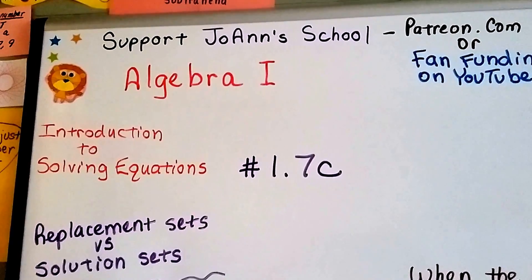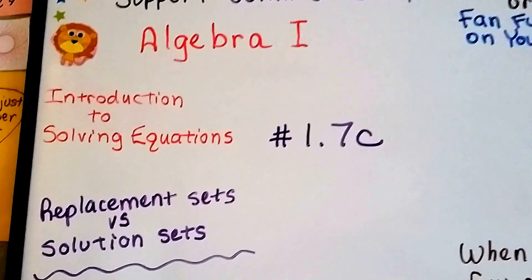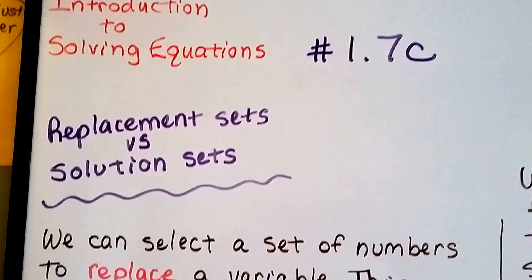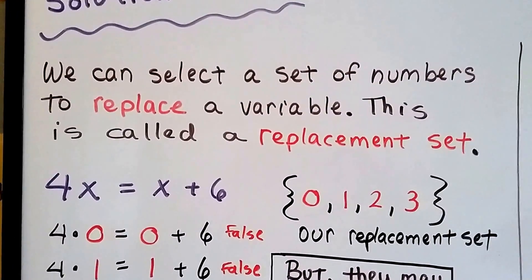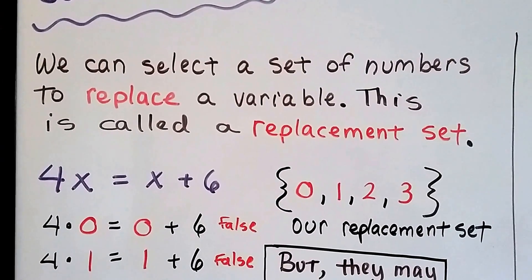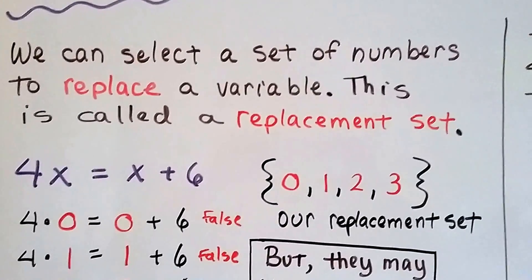Algebra 1 number 1.7c. We're talking about solving equations now. This is replacement sets versus solution sets. We can select a set of numbers to replace a variable. This is called a replacement set.